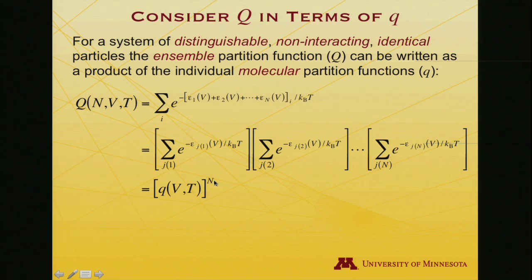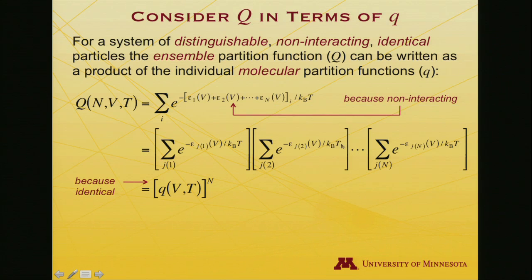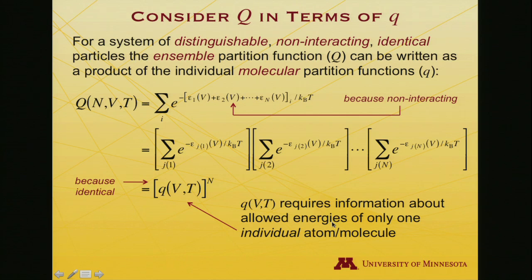So here's where the n dependence comes in. The molecule doesn't depend on n, there's one molecule. The ensemble partition function depends on n, because we're to the nth power. A key feature here is the non-interacting aspect means that this energy is just the sum of individual energies. And the identical character of the molecules lets us go from this product to this exponential. Finally, again, emphasizing little q only requires you to know about the allowed energies of an individual atom or molecule, not about interactions between them.